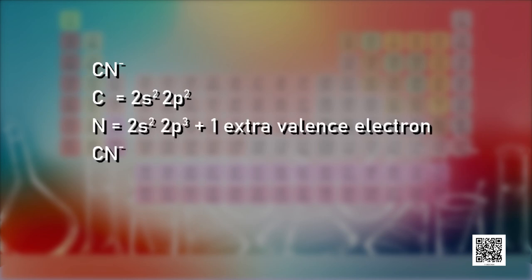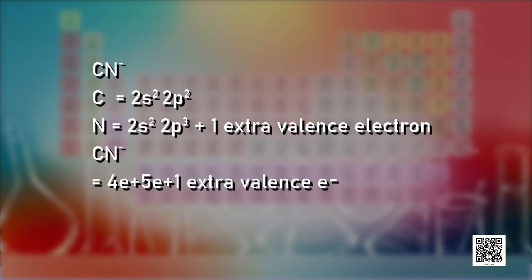What if we have the cyanide ion? It is an anion, so each negative charge means addition of 1 electron. Carbon has 4 valence electrons, and nitrogen (2s2 2p3) has 5 valence electrons. Adding 1 extra electron for the negative charge gives a total of 10 valence electrons.